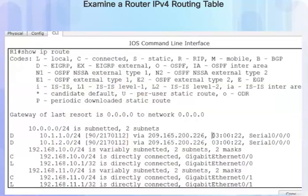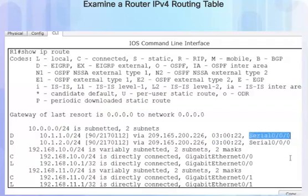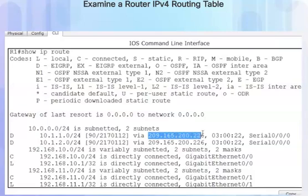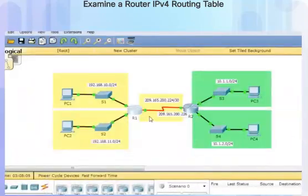We can also see the timestamp that tells us how much time has elapsed since we last learned about this route. The last piece of information is the exit interface. To reach the 10.1.1.0 network, we need to go to the next hop router at 209.165.200.226 and exit our own serial 0.0.0.0 interface — that's this interface here on router R1.